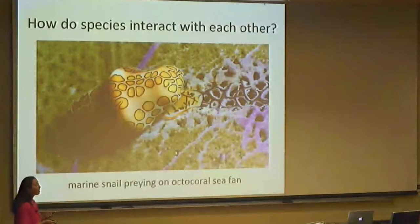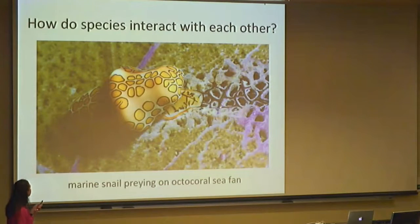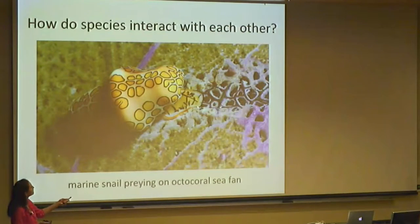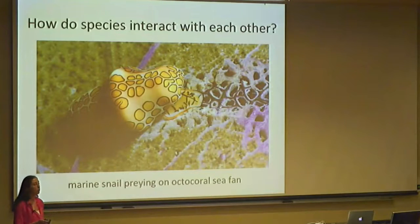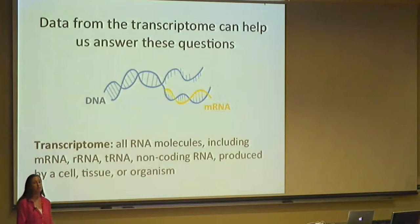Not all relationships or interactions are mutually beneficial. In this example, I'm showing a marine snail preying on an octocoral sea fan — an example of a predator-prey interaction. You can see as this snail is moving across, it's feeding the tissue away from the coral. We can use data from the transcriptome to help us answer questions about how species interact with each other and with their environment.